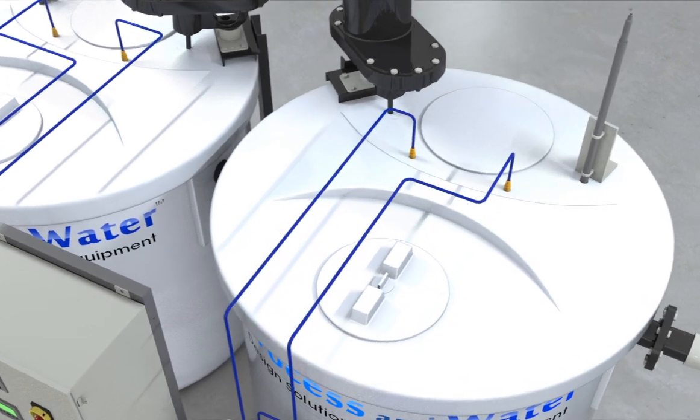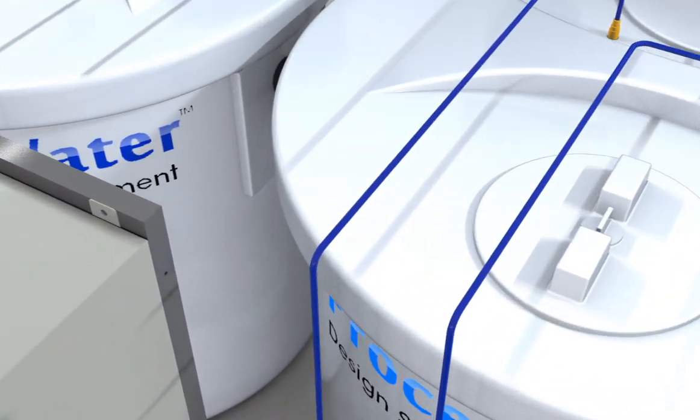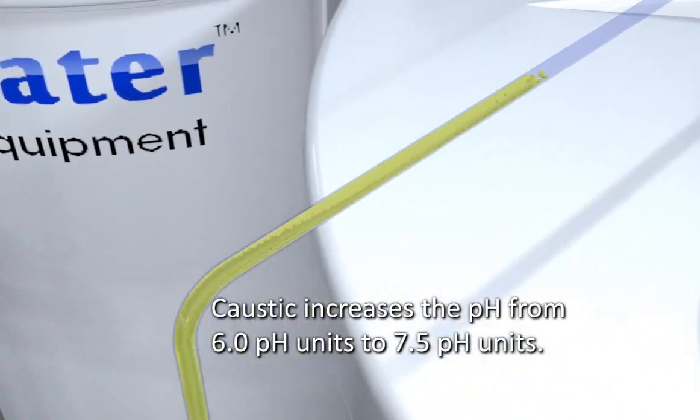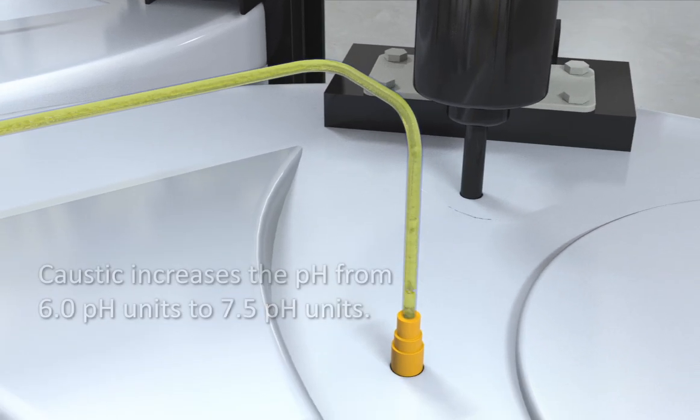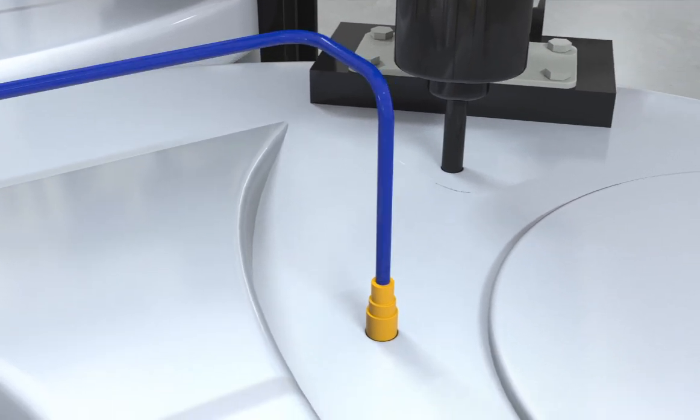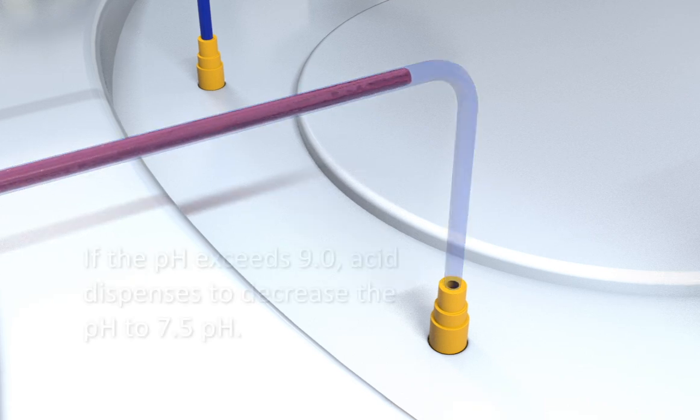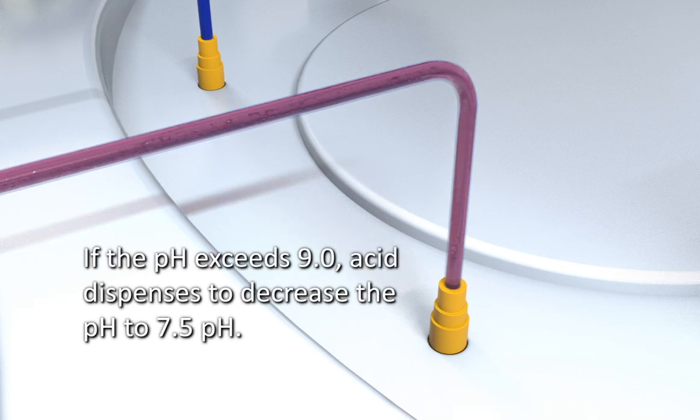The second caustic metering pump feeds the chemistry once again to increase the pH from the 6.0 pH units to 7.5 pH. If the pH should increase more than desired to over 9.0 pH units, then the acid pump feeding this tank will feed acid to decrease the pH to 7.5 pH units.